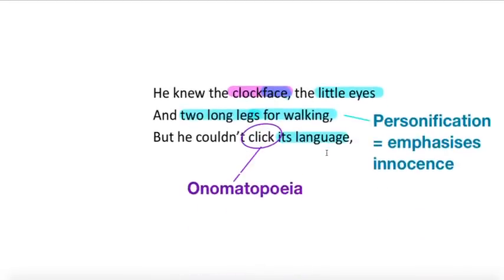He knew the clock face, the little eyes and two long legs for walking, but he couldn't click its language. So he says he knows the clock, basically, but he doesn't really, does he? This just exposes how little he understands about time. The personification here, I think, helps emphasise the innocence. The only thing he can take from looking at a clock is that it looks like a person with the two long legs for walking and the little eyes. And we've got the quite clever bit of onomatopoeia here. Obviously, couldn't click can mean you couldn't understand something. It didn't click, meaning I didn't understand it. But obviously, click also reflects the sound that a clock makes. So we've got that reminder of kind of the ticking of time going by.